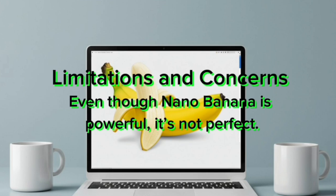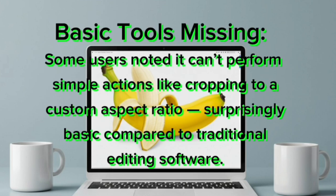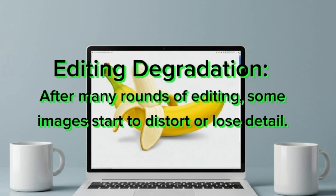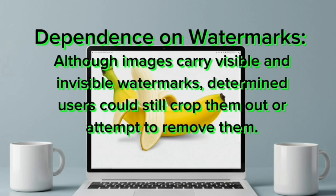Limitations and concerns: even though Nano-Banana is powerful, it's not perfect. Basic tools are missing — some users noted it can't perform simple actions like cropping to a custom aspect ratio, which is surprisingly basic compared to traditional editing software. Deepfake risks — the ability to preserve identity so well raises fears of misuse, since bad actors could create convincing but fake images of real people. After many rounds of editing, some images start to distort or lose detail. And although images carry visible and invisible watermarks, determined users could still attempt to remove them.